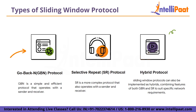SR is preferred in error-prone networks as it minimizes retransmissions and maximizes network utilization. In summary, sliding window protocols — Go-Back-N and Selective Repeat — are essential components of data communication in computer networks. They ensure efficient and reliable data transmission by allowing multiple packets to be transmitted simultaneously while adapting to network conditions and retransmitting only necessary data.